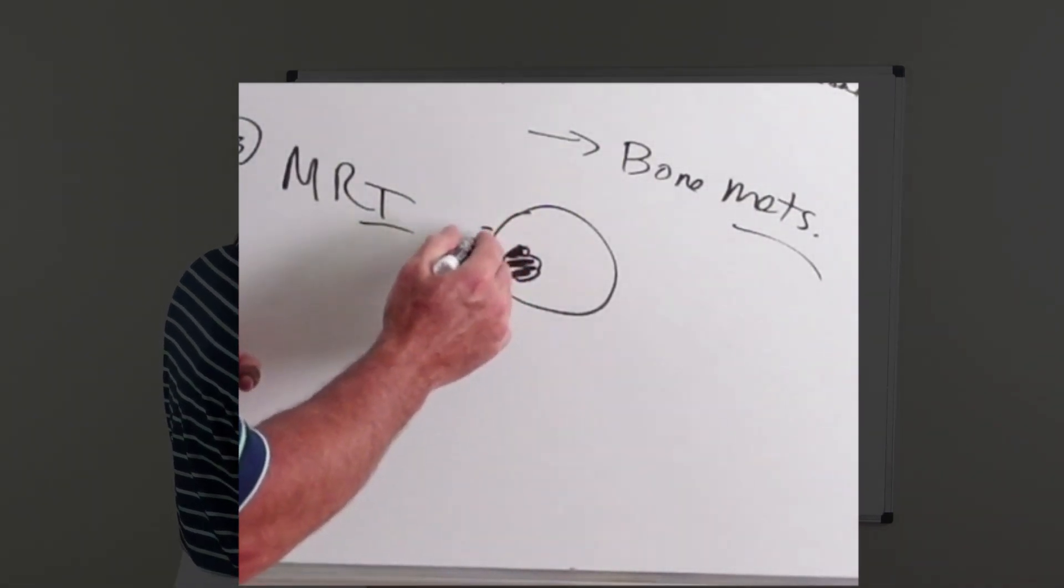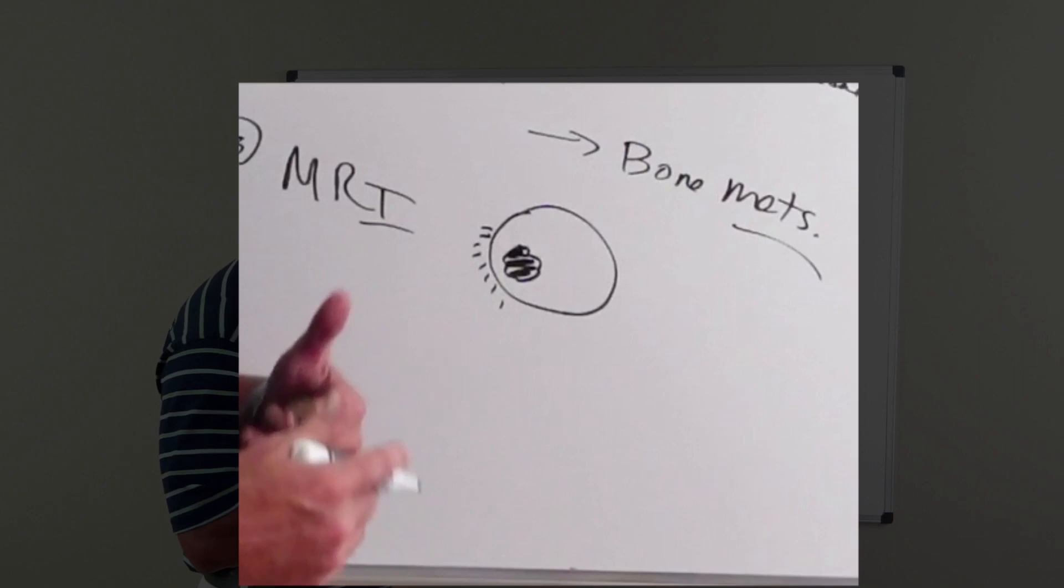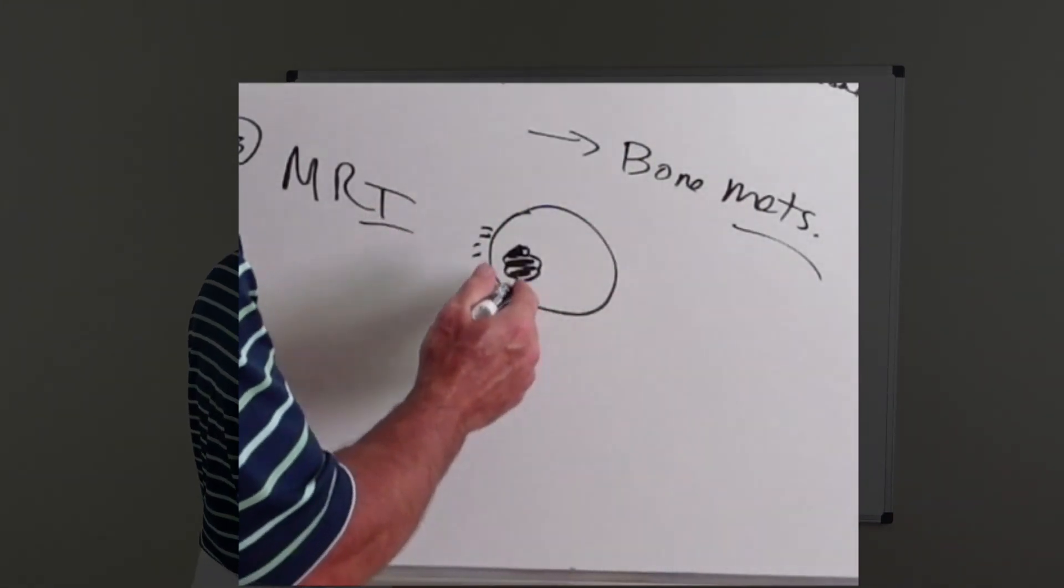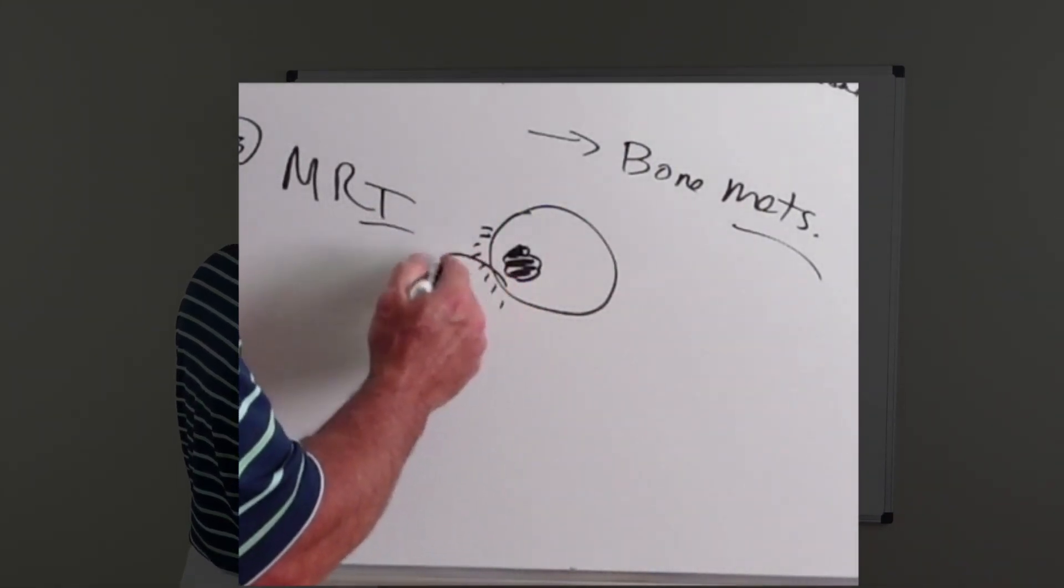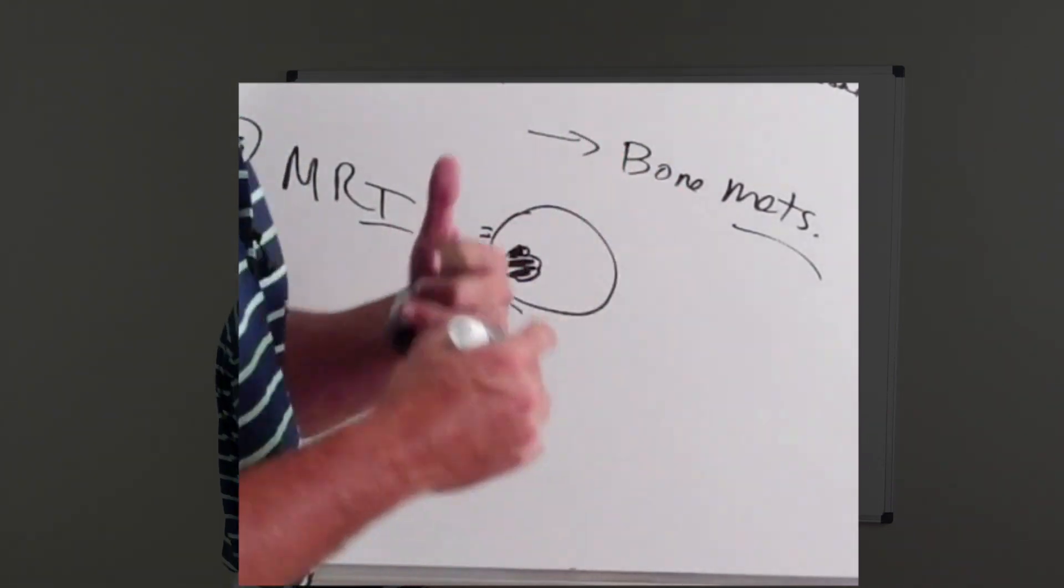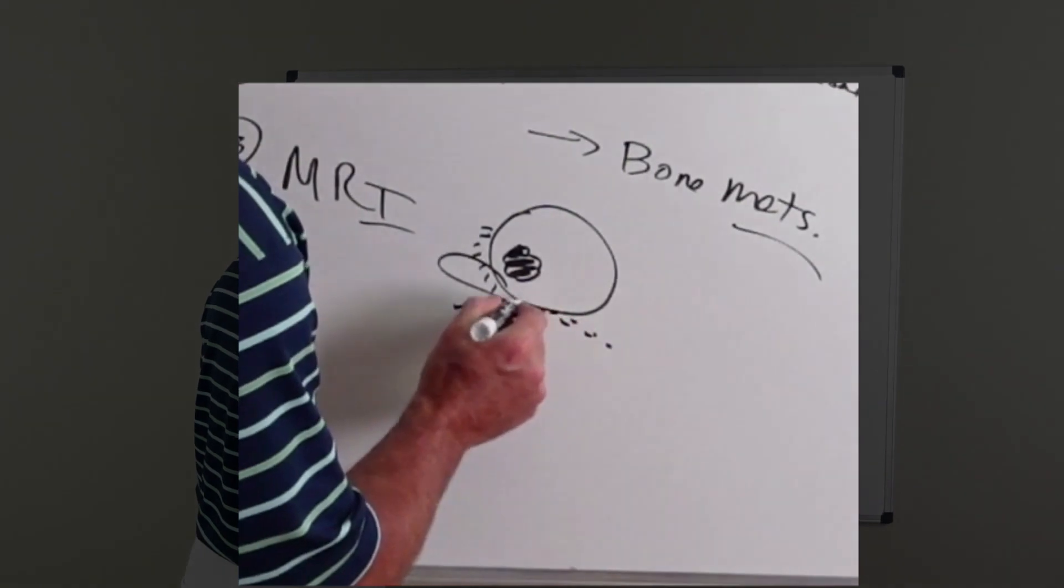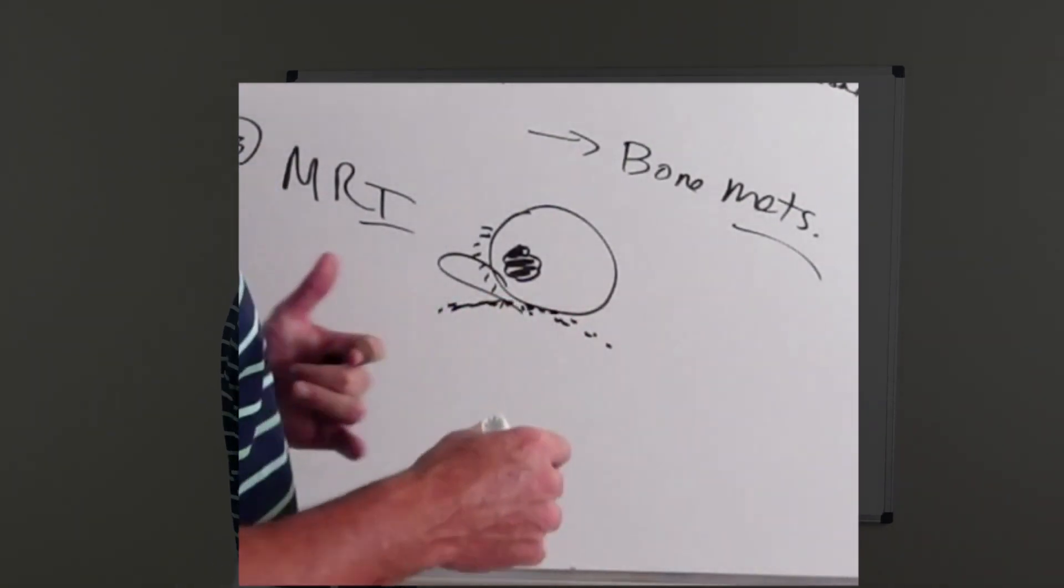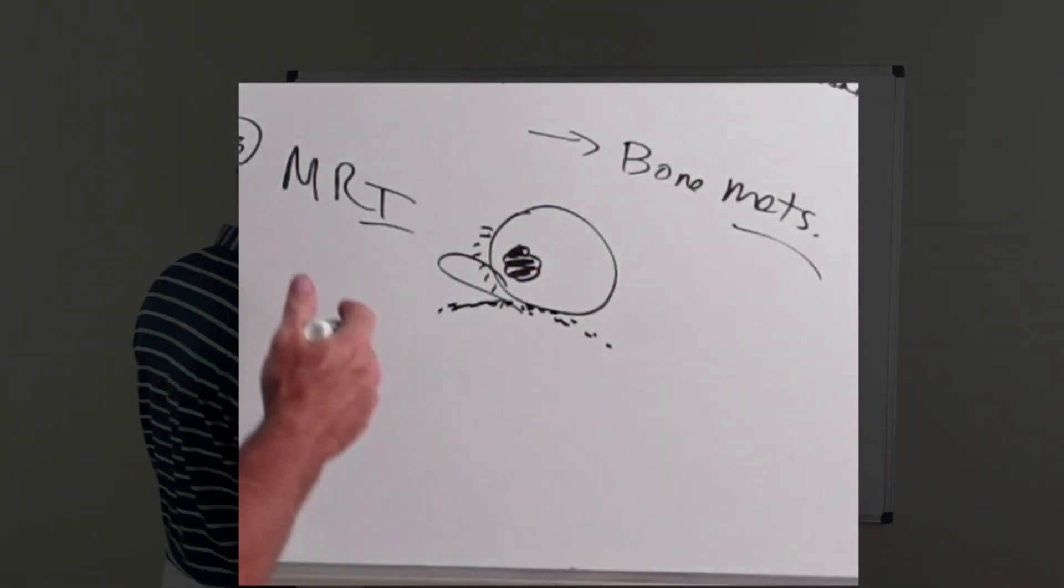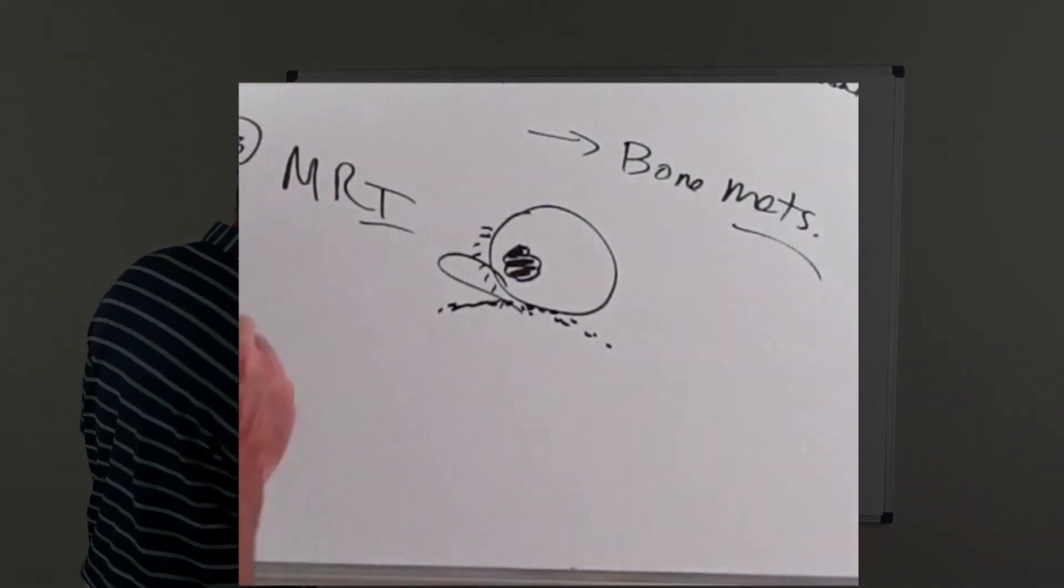Is it extending outside of the capsule of the prostate? Is the cancer close to the neurovascular bundle that affects erections after radiation or surgery? So MRI is something that is done.